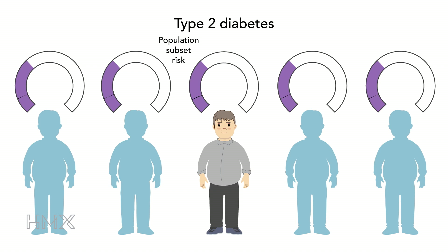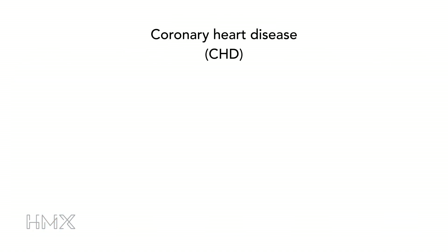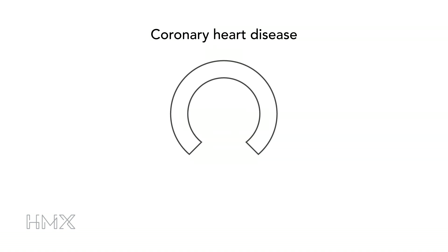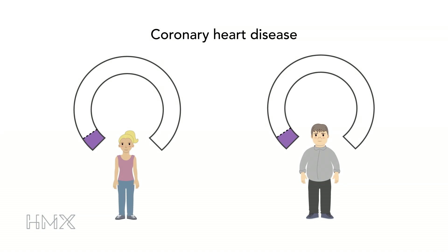Let's look at an example of how this works in more detail. Consider the risk of coronary heart disease, or CHD, which is the buildup of plaque in the arteries of the heart, and which substantially increases risk of heart attack and stroke. CHD is a complex trait determined by genetics and the environment. The risk of an American adult developing complications of CHD, such as heart attack or stroke, is about 6% over a 10-year period. However, if we look at two individuals — Adriana and Joseph — you might imagine that their risk is quite different. How can we use information about both their genetics and environment to give them a more accurate picture of their risk?